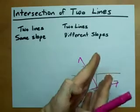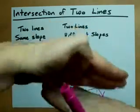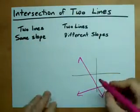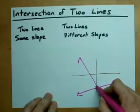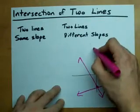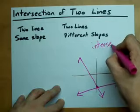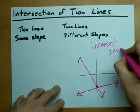As long as the two lines have slightly different slopes, they're always going to meet somewhere. Two lines with different slopes intersect each other exactly once.